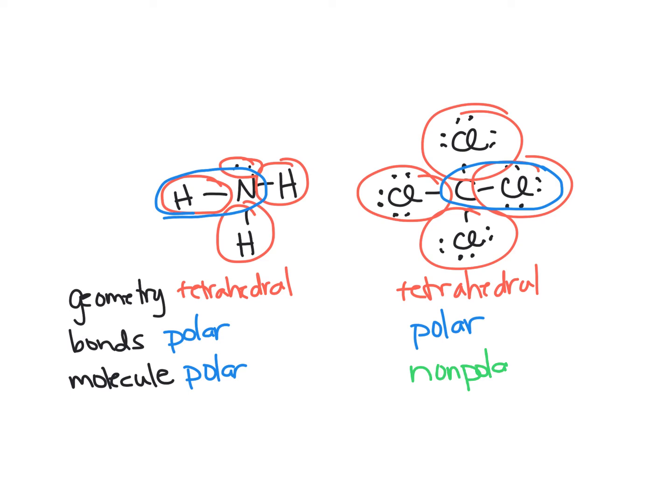When we talk about having lone pairs affecting the polarity of a molecule, we're talking specifically about on that central atom. With NH3, there were lone pairs on the central atom. Most of the time when we see that, the molecule is polar. The lone pairs on the chlorine atoms do not affect the behavior of the carbon. We're only worried about what's attached to the carbon. We're looking at the geometry around the carbon atoms, not the chlorine atoms. So the presence of lone pairs doesn't necessarily make a molecule polar if they are on those terminal or outer atoms. We have to worry about what's attached to that central atom.